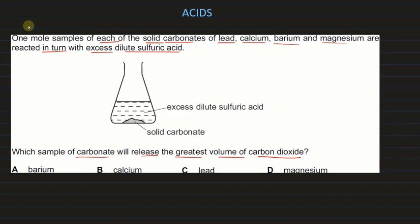All will react, but lead carbonate forms lead sulfate which is insoluble in water. Similarly, calcium sulfate and barium sulfate are insoluble. These insoluble products form a coating over the solid, preventing the inner solid from reacting with sulfuric acid, so they give less gas. Magnesium sulfate, however, is soluble — as it forms it dissolves, so magnesium carbonate always remains in contact with sulfuric acid and gives the greatest volume of carbon dioxide.